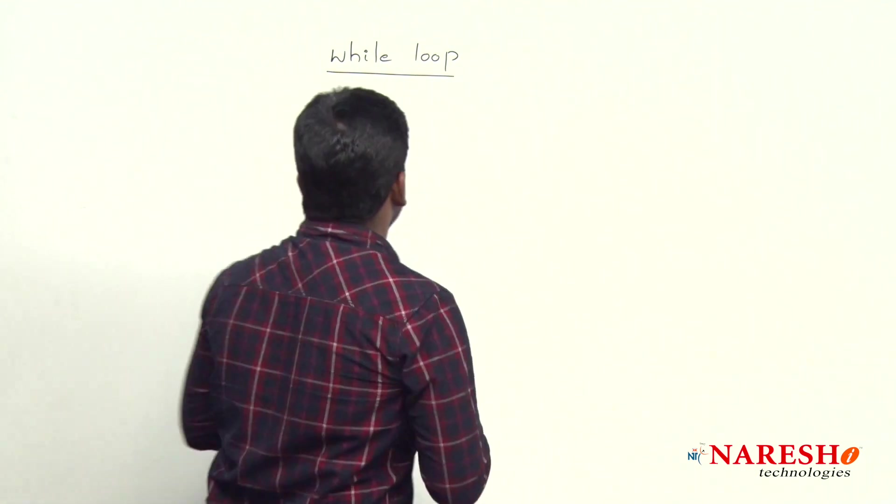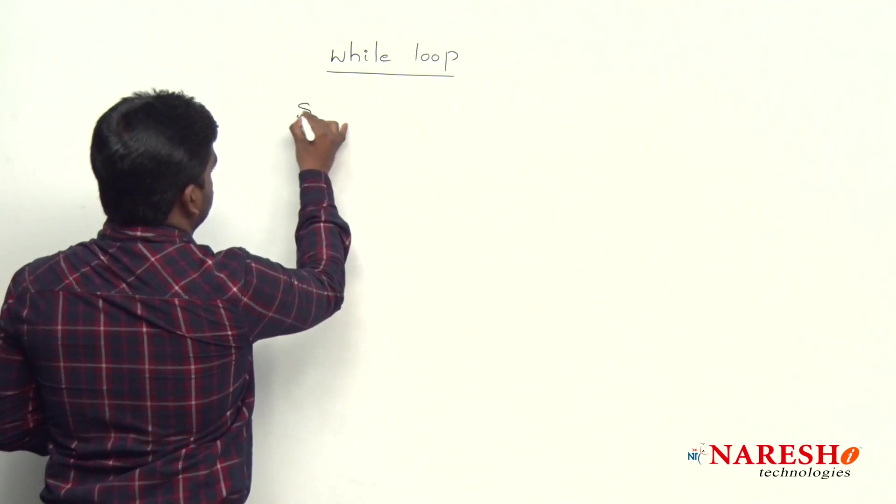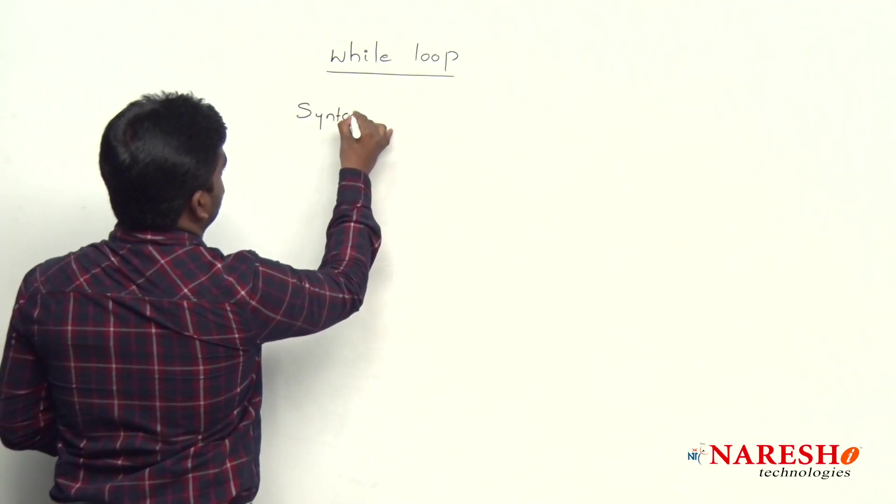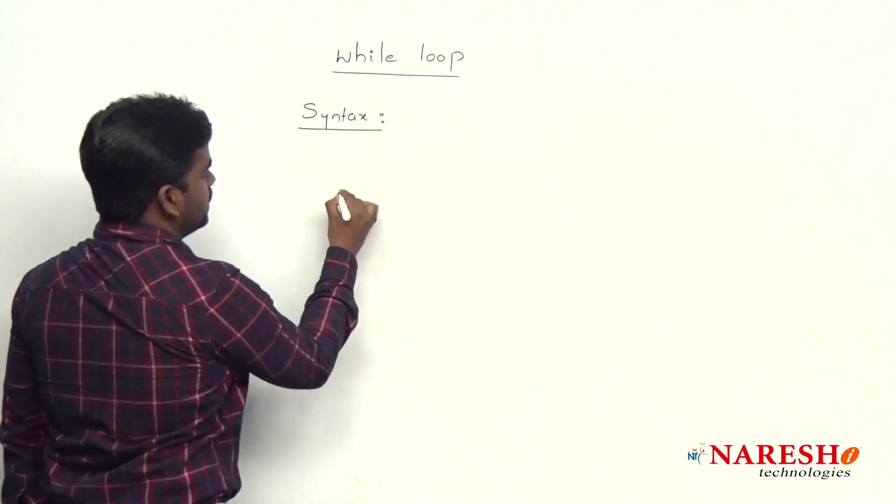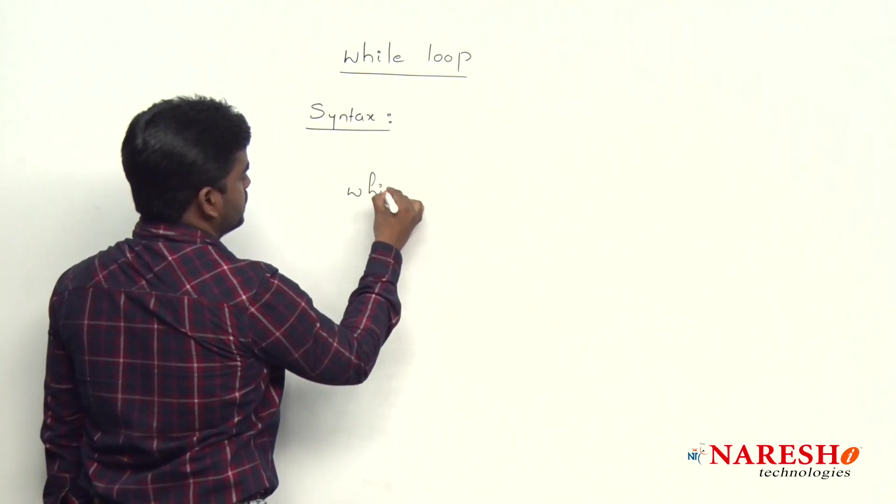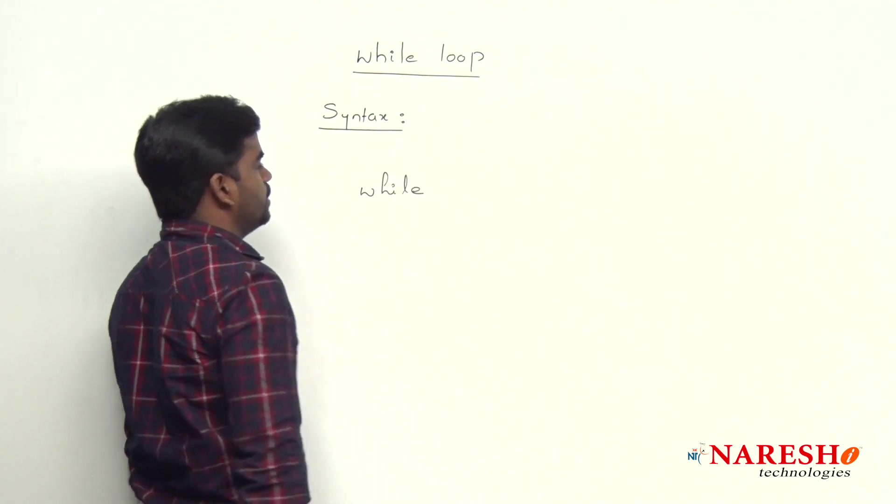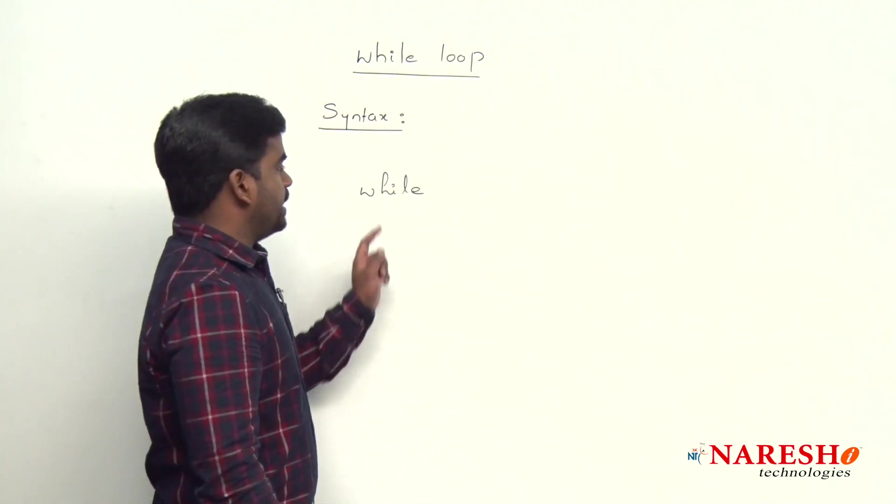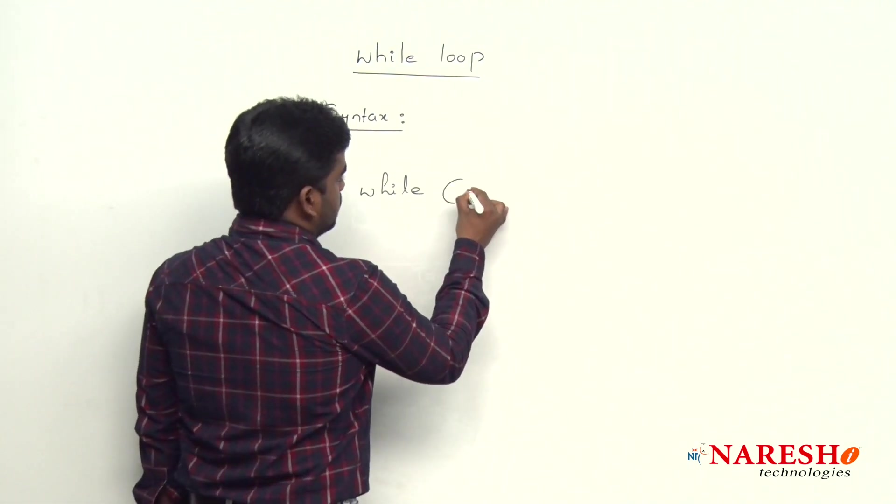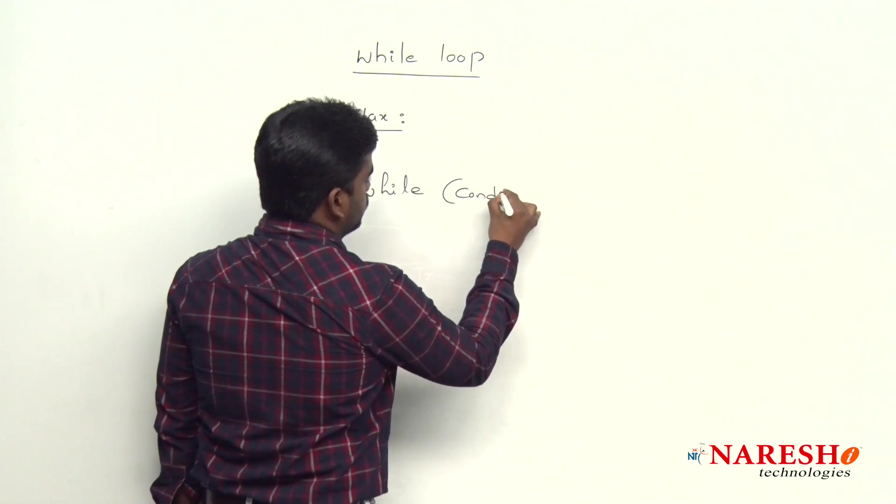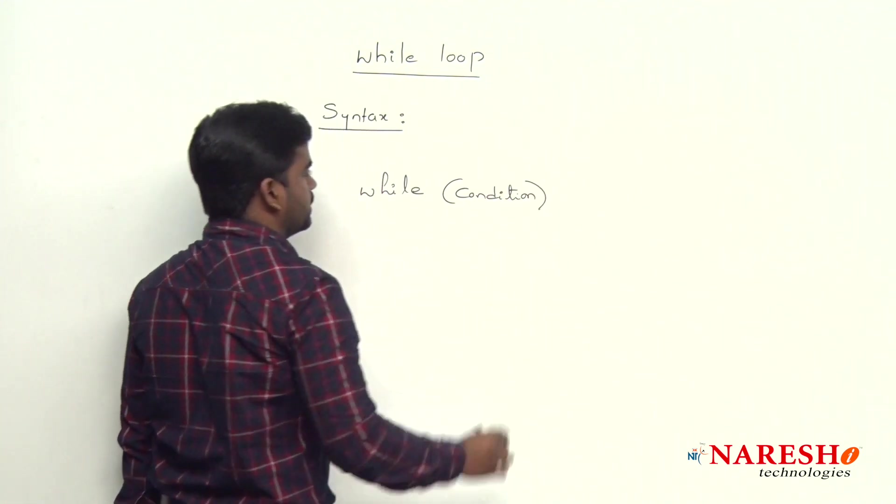The syntax of while loop is just like if block only. While is a keyword in most programming languages. It starts with a w, while, and followed by the condition you want to specify to execute this loop.